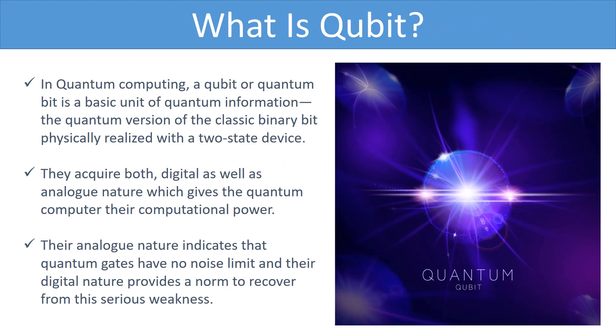What is a qubit? In quantum computing, a qubit or quantum bit is a basic unit of quantum information, the quantum version of the classic binary bit physically realized with a two-state device. They acquire both digital as well as analog nature which gives the quantum computer their computational power. Their analog nature indicates that quantum gates have no noise limit and their digital nature provides a norm to recover from this weakness. Now, having learnt about qubits, let's learn how the classical and quantum computers are different from each other.